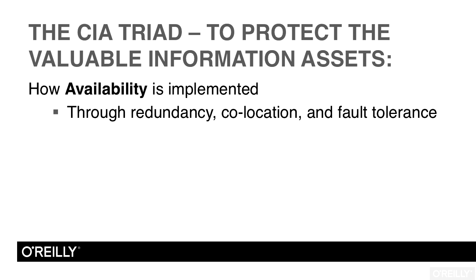Finally, we're going to look at how availability is implemented. Typically, we will use redundancy — multiple copies of the information or of the information asset — to provide a higher level of availability, along with co-location and fault tolerance, to keep the information assets available when needed.